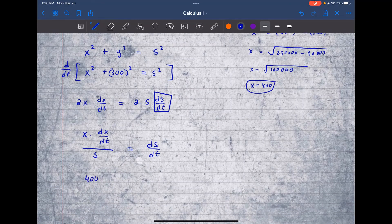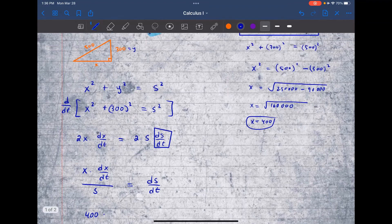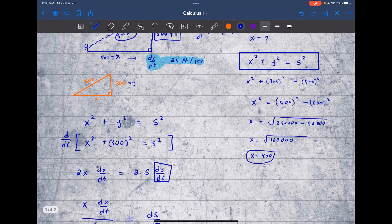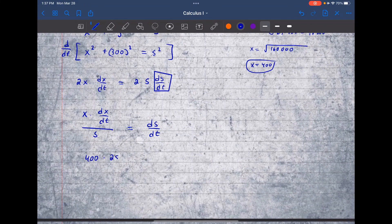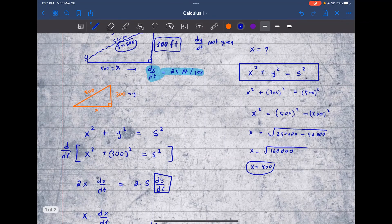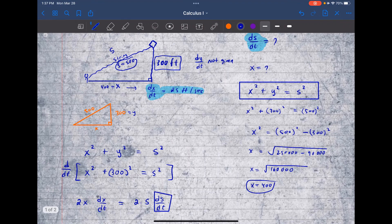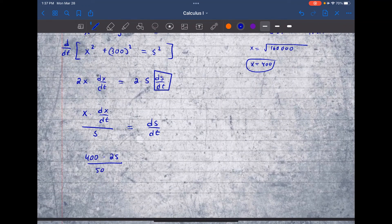We know x is 400. And the rate for x is dx/dt. That's 25. And we know s is 500. And we know s is how far the string. So that's 500 on the bottom right here.